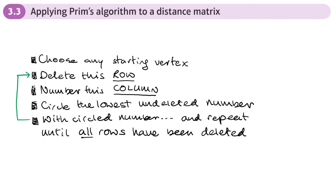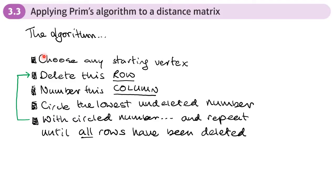This is the third section of chapter three on algorithms and graphs, and this is applying Prim's algorithm to a distance matrix. A distance matrix shows a weighted graph in a grid, where the numbers tell us the distances or weights between different vertices, and we can apply Prim's algorithm to this.